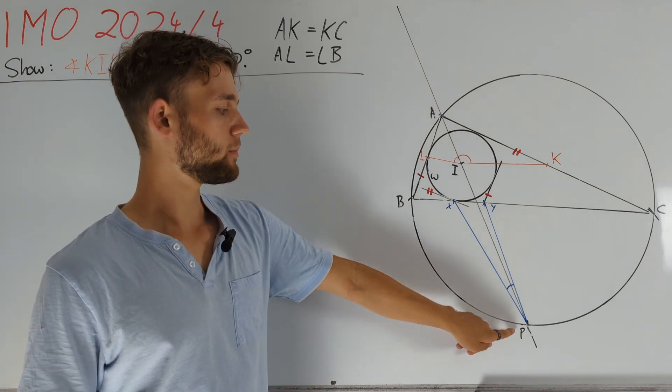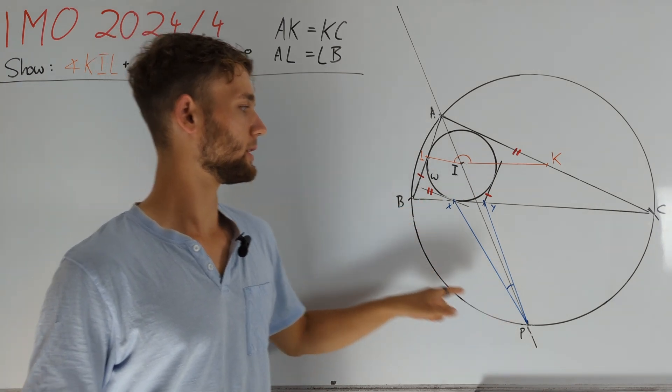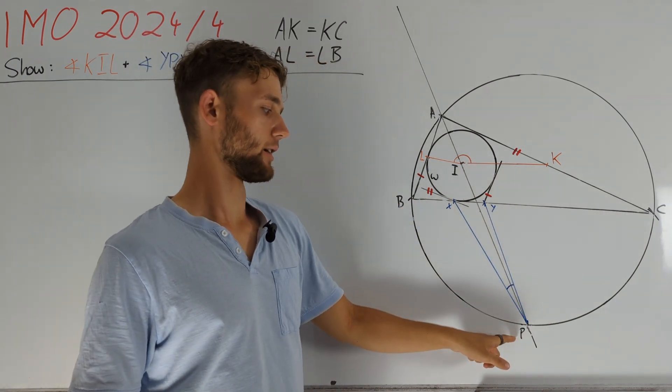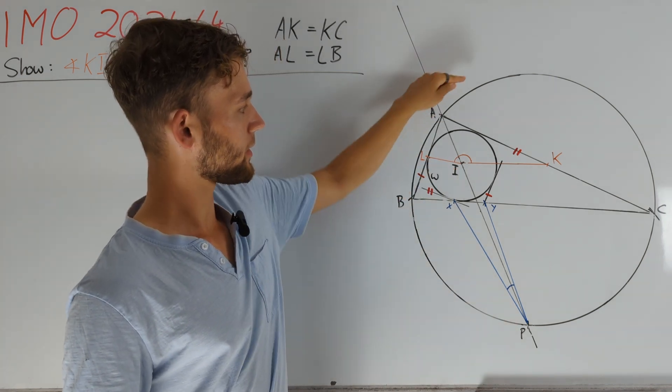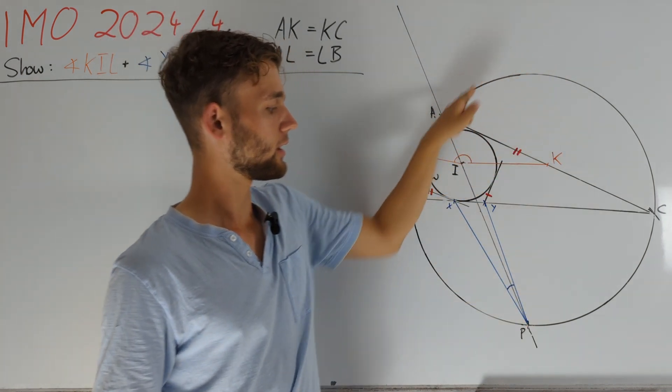Furthermore, let P be the midpoint of arc BC that doesn't contain A. So P is the second intersection of AI with the circumcircle of triangle ABC.